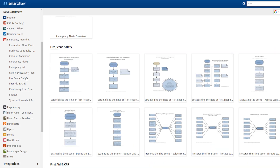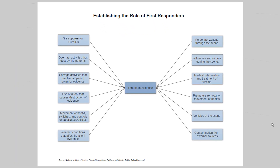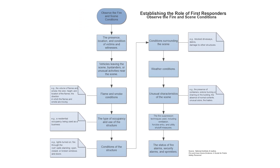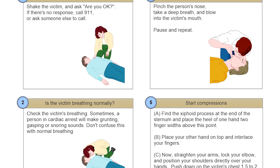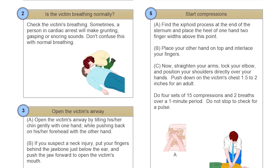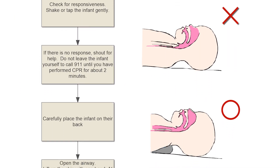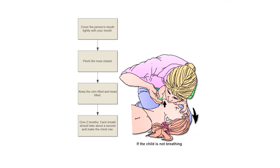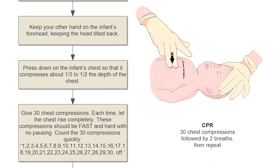SmartRAW also has several detailed visuals for fire scene safety — helpful guides for first responders and for those who are in charge of fire safety in your building. Our first aid and CPR visuals provide helpful information and detailed procedures that could save somebody's life. Step-by-step illustrated guides walk you through how to perform CPR in various situations on adults, children, and infants.